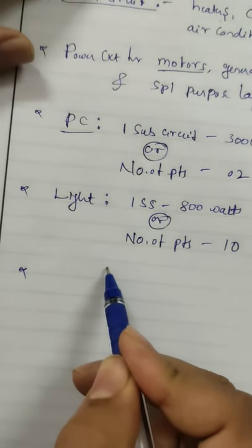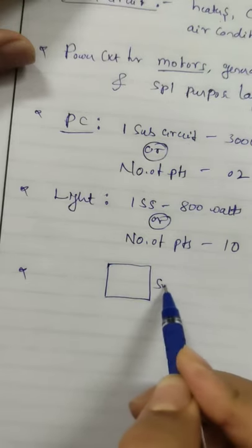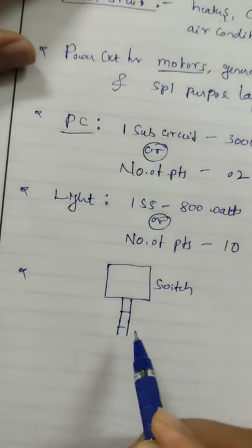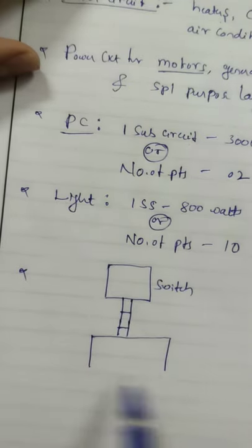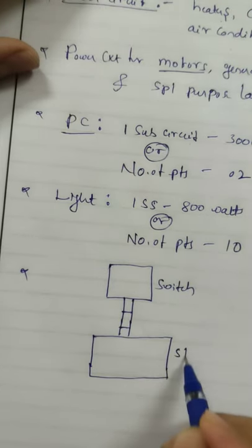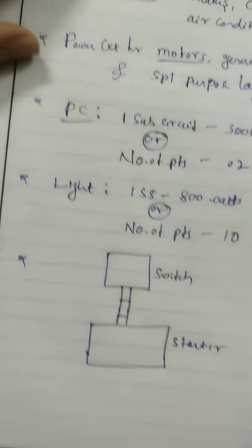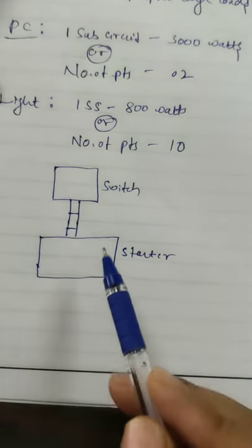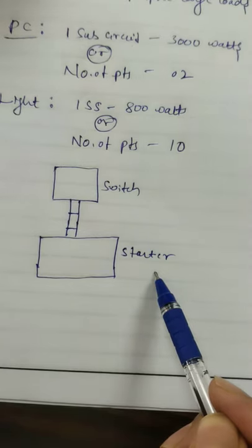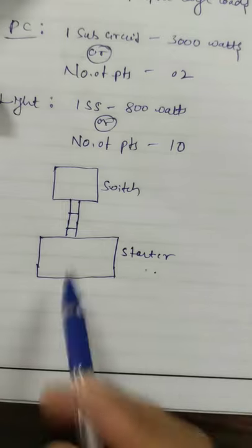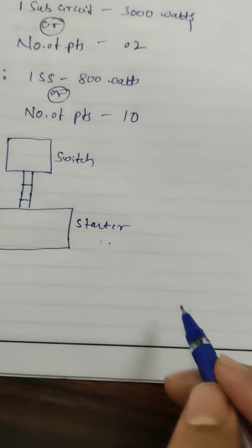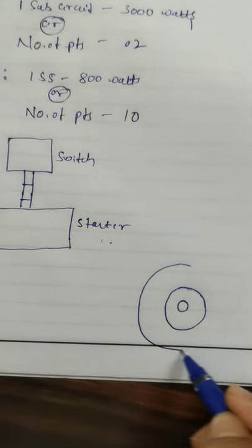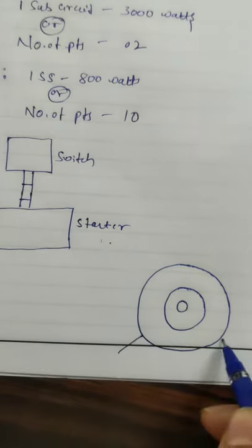Let us discuss the single-line diagram for power circuits. The first component is the switch. After the switch, using a conduit pipe, we connect to the starter. In motors, starters are used to limit the starting current to the machine — this is essential because the starting current is almost three to five times higher than normal. Different types of starters are used for three-phase induction machines, which we will discuss later. From the starter, the connection goes to the machine — either an AC or DC machine.